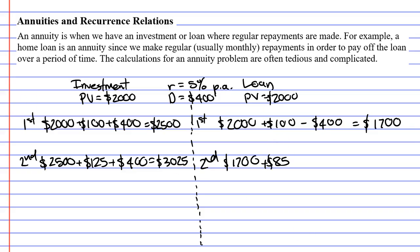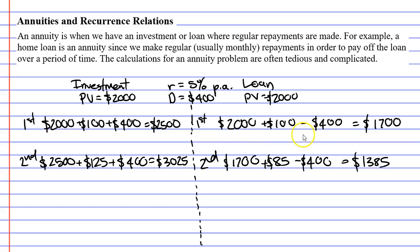You might notice that our interest has decreased, which is good — we're paying off a loan, so we want our interest to decrease. And of course, we're also going to make our repayment of $400. This comes out to $1,385.